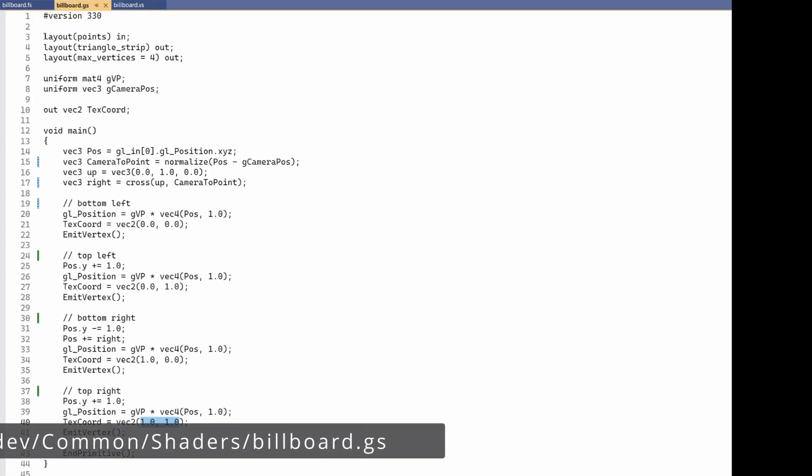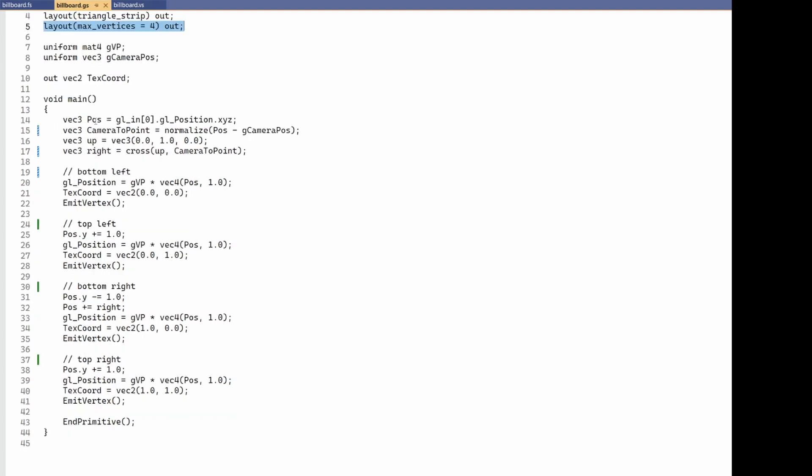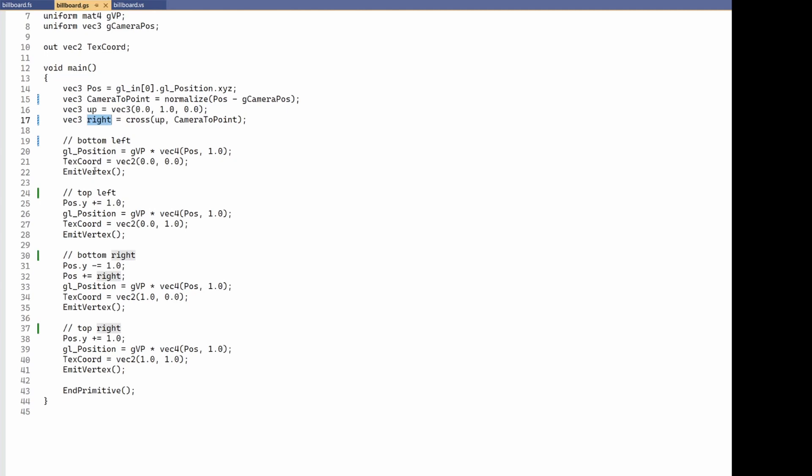In the GS, we define the input primitive type to be points. The output is a triangle strip, and we have four output vertices for our quad. We extract the position of the point, calculate the vector from the camera to the point, and the cross product between the up vector and camera to point vector provides the right vector. From now on, we simply repeat the steps that we saw in the diagram.